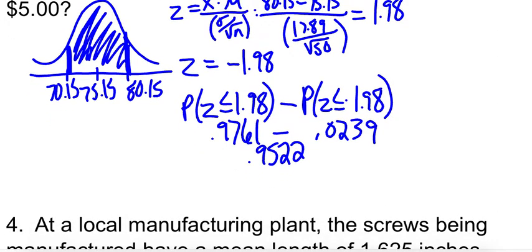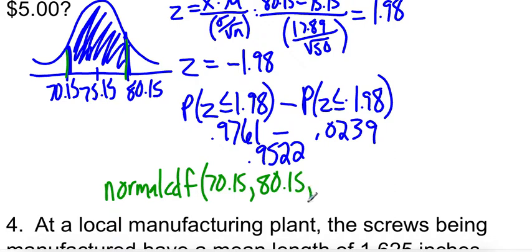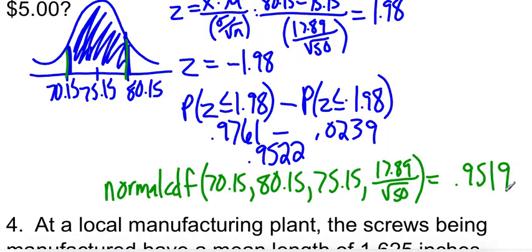We can also do this on the calculator without having to calculate Z-scores. So it is easier, but I just want you to know how to do it by hand in case you're at home doing homework and you don't have a calculator on you. So in the distribution menu, you have normal CDF. Our lower bound is 70.15. Our upper bound is 80.15. Our mean is 75.15. And our standard deviation, remember this is the adjusted standard deviation. So 17.89 divided by root 50. And when we put that into the calculator, we get 0.9519. So it is slightly different because we had some rounding errors and the table's not as thorough.